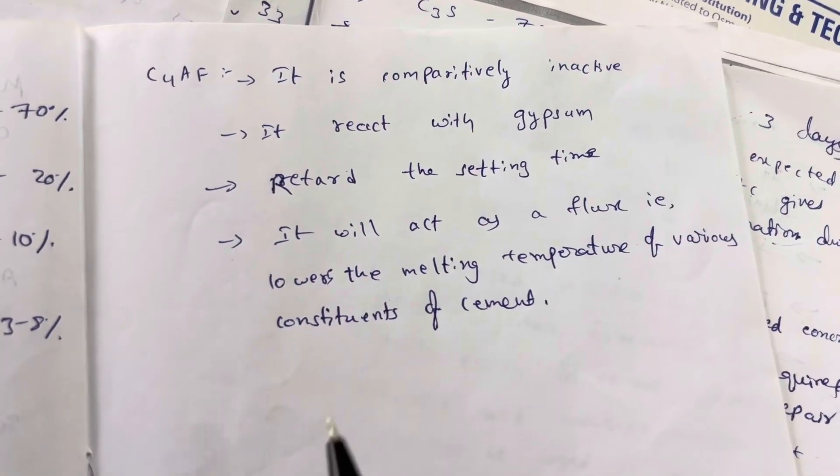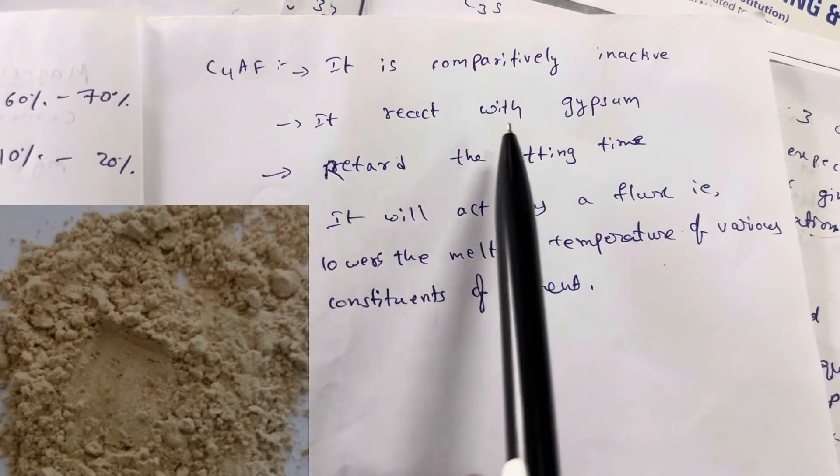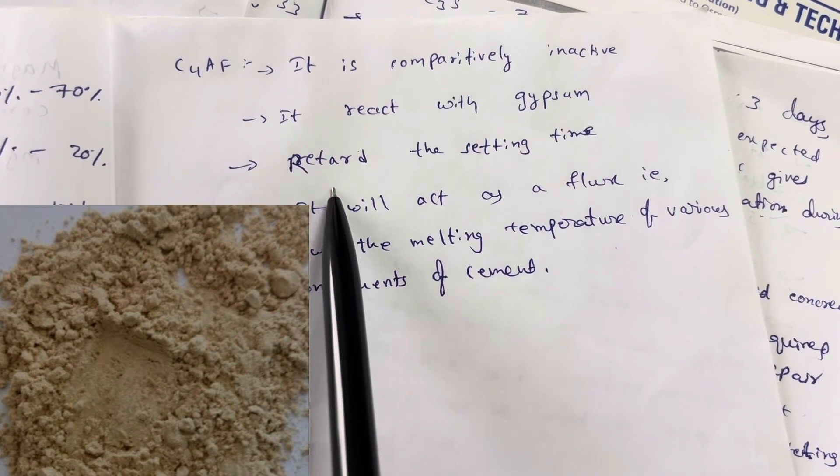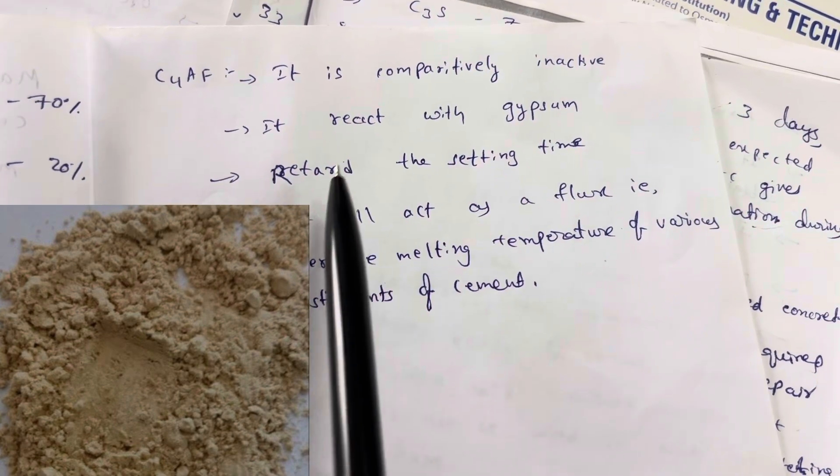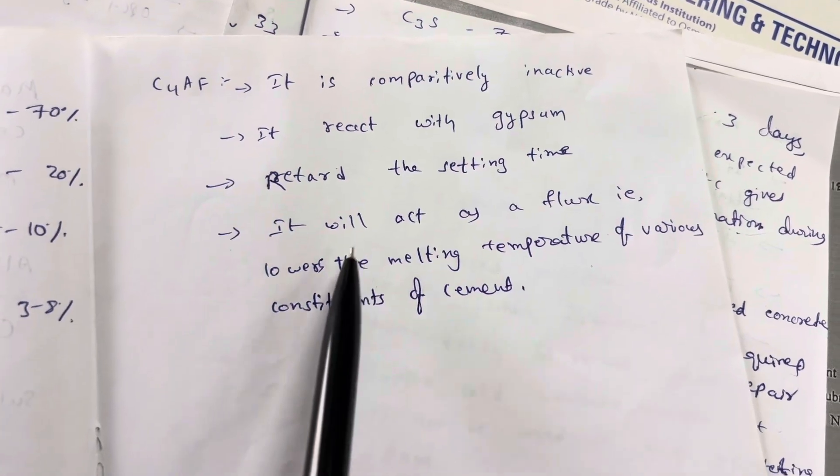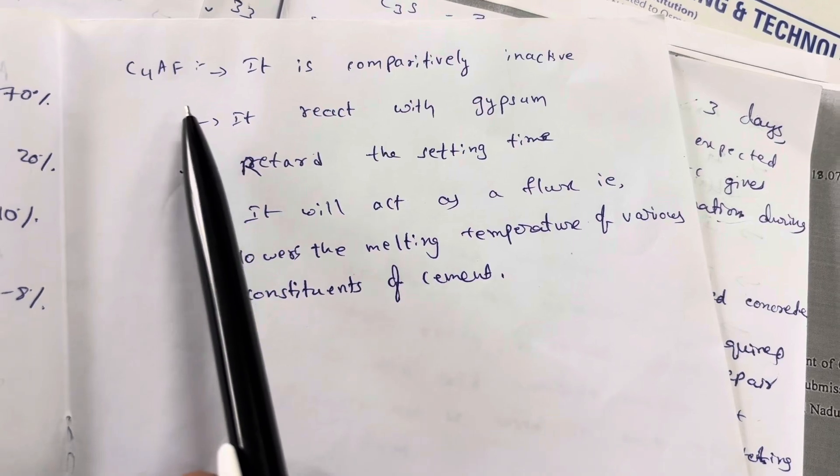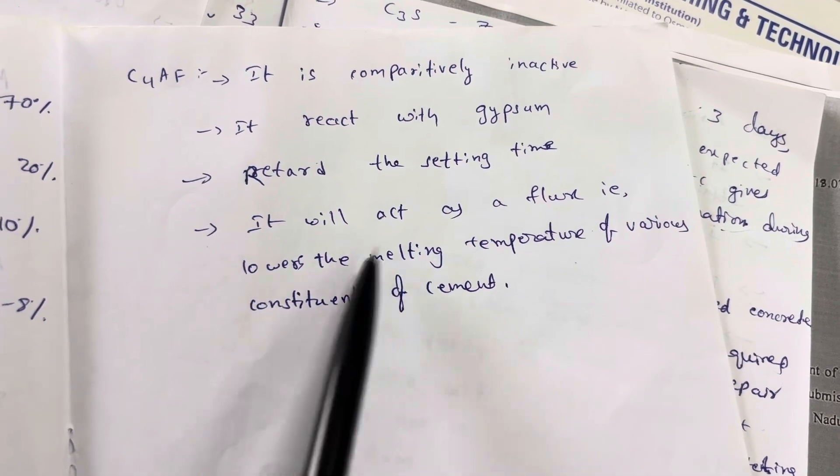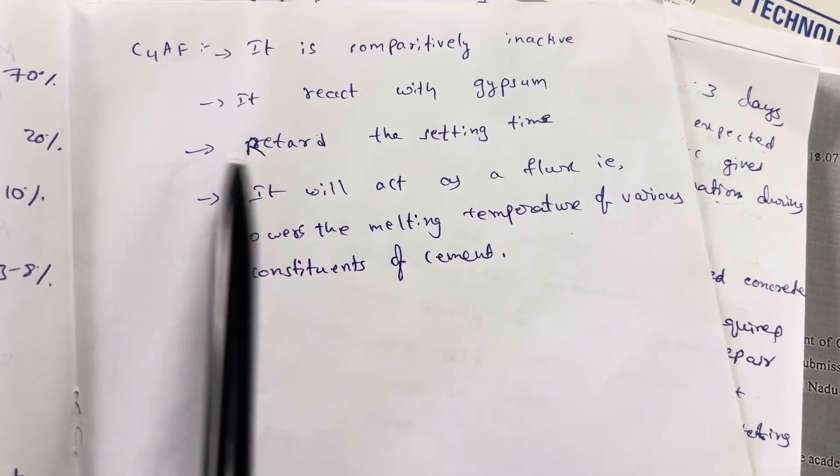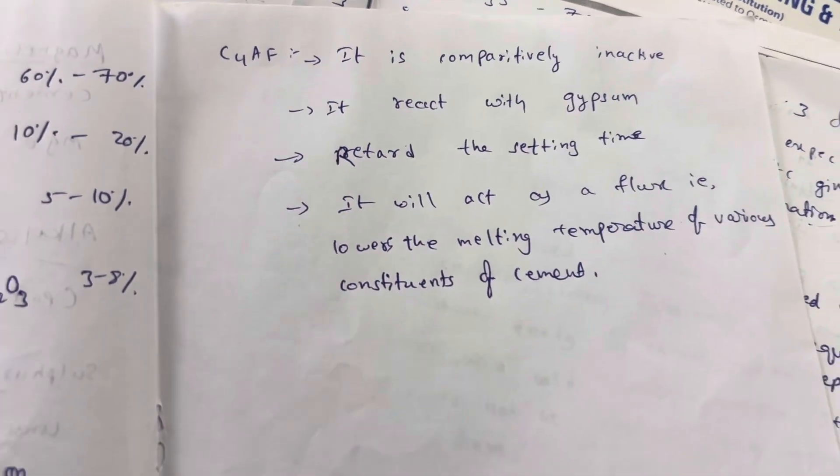C4AF is comparatively inactive. It reacts with gypsum and retards the setting time. It increases the setting time of cement. It acts as a flux, meaning it lowers the melting temperature of various constituents of cement. Thank you.